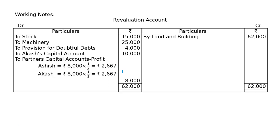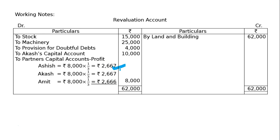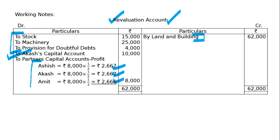In this question there are three main Revaluation journal entries. First: Revaluation account debited to Stock, Machinery, and Provision for Doubtful Debt. Second: Land and Building account debited to Revaluation account — being asset increased. Third: Revaluation account debited to Akash's capital account — remuneration. Fourth: Revaluation account debited to partners' capital accounts — Asis's, Akash's, and Amit's capital accounts — being profit on revaluation transferred. So that is 4 journal entries.